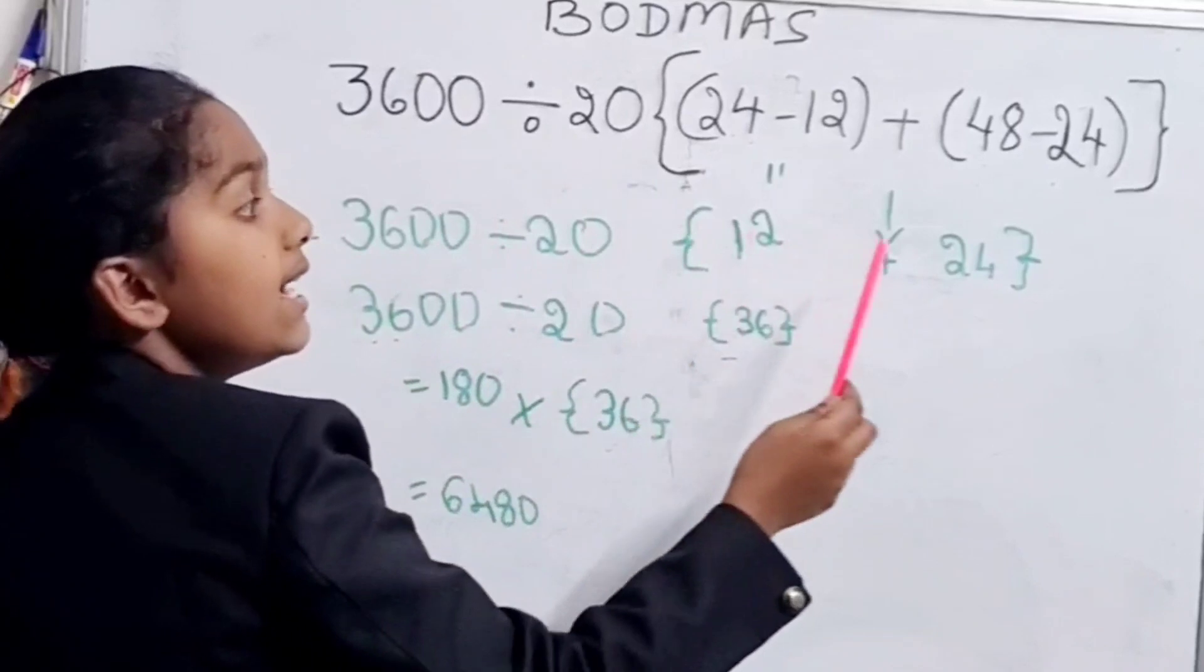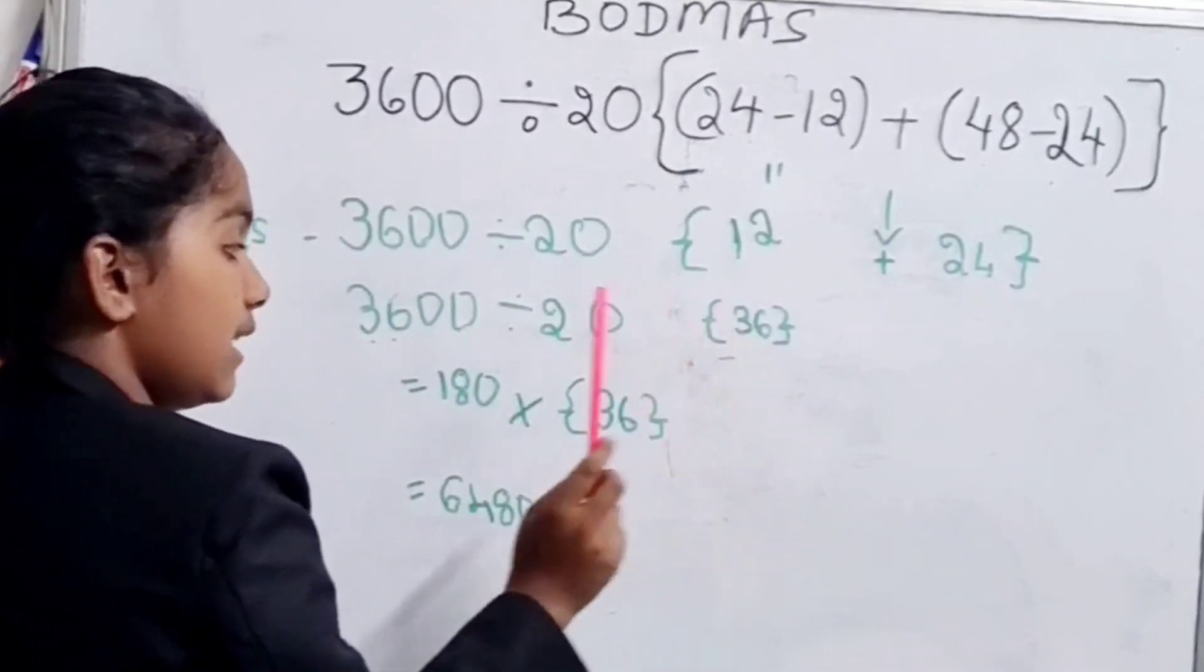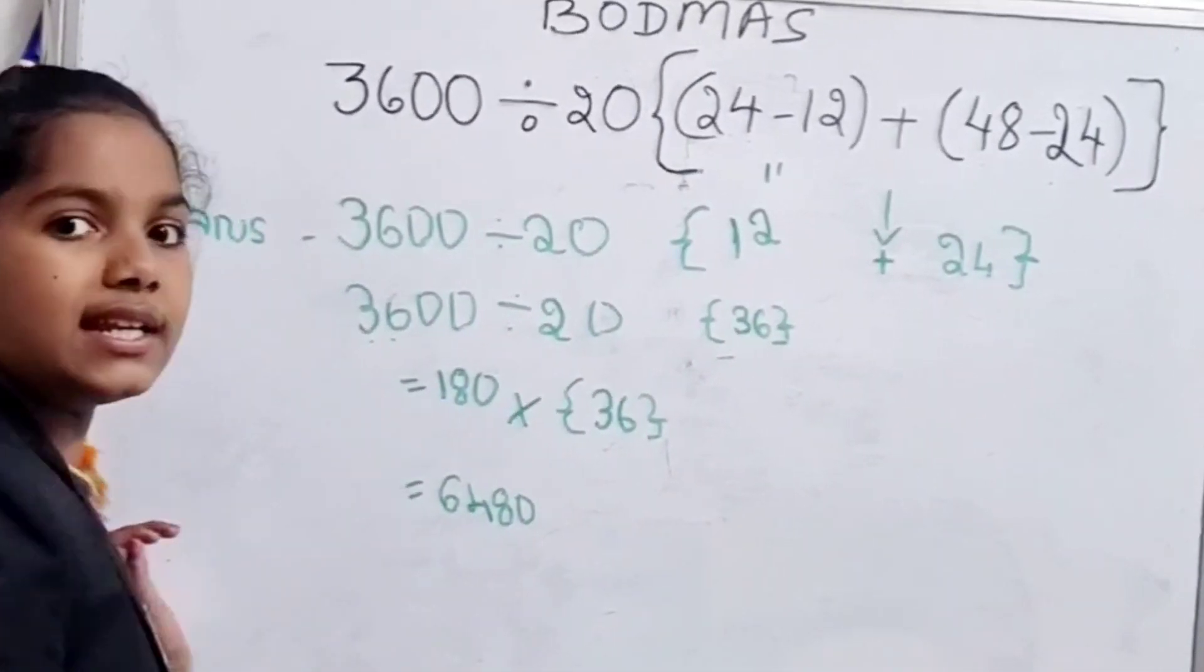So it will come like this. Then it will slowly simplify into this. Then slowly simplify into this, then into this, and then we can get the final answer.